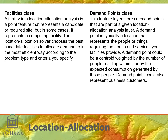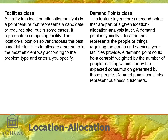The demand point class stores the other part of the equation: the locations that need service at these facilities. The demand point could be a point class such as block-level population points. In other cases, you may only have census tracts and could use their centroids as the points to be allocated to the competing facilities. Anything that can be reduced to a point can become a demand point — often business customers or potential customers based on demographic profiling.